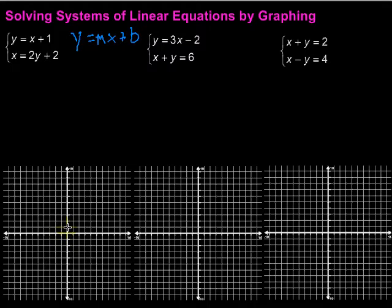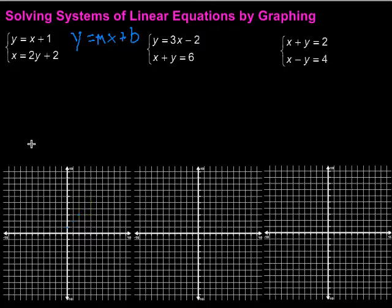The line starts at 1 on the y-axis, and then it's going to go up 1 over 1 because the slope is also 1. So, up 1 over 1, up 1 over 1, and so on until we can draw the line.